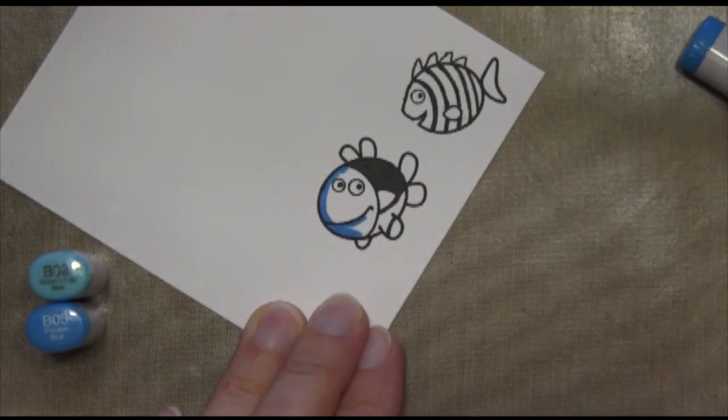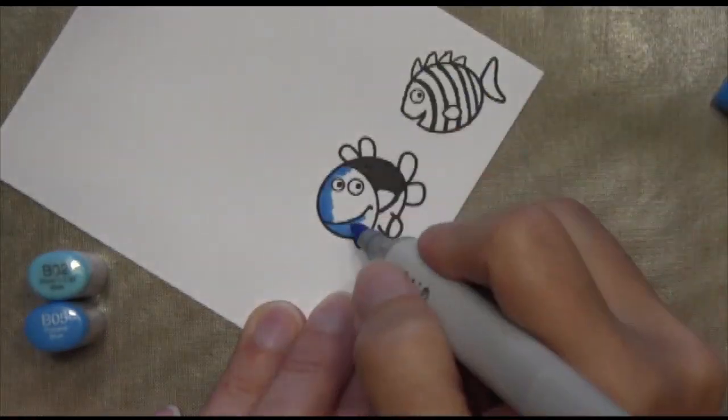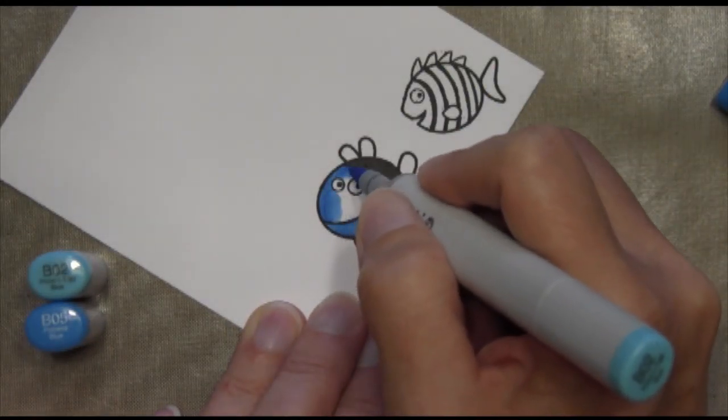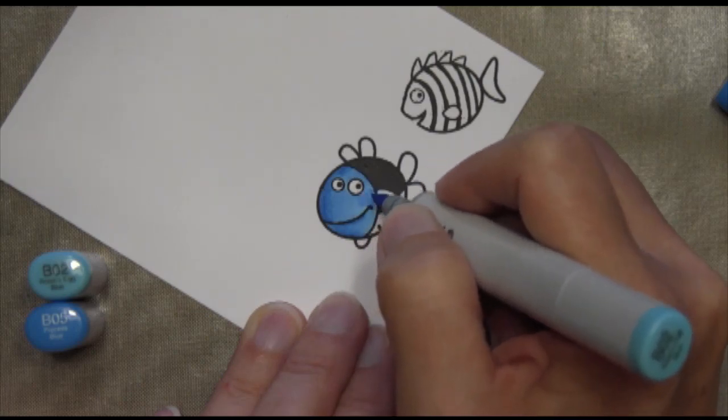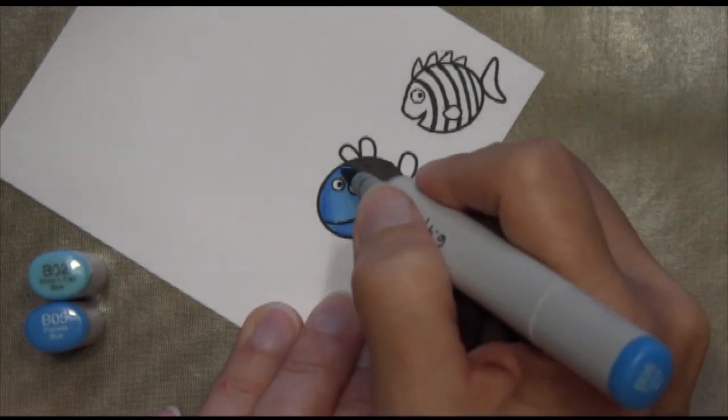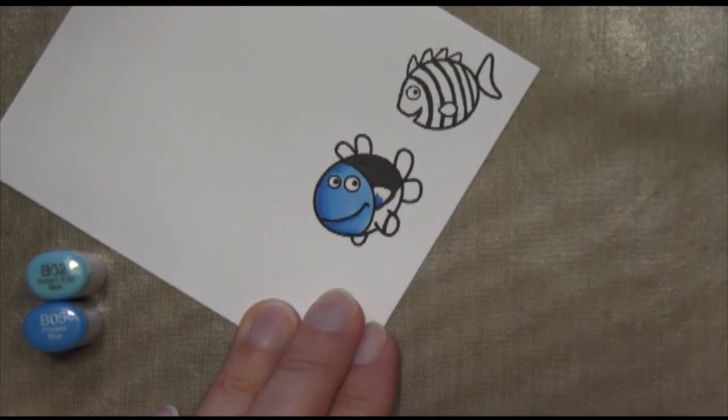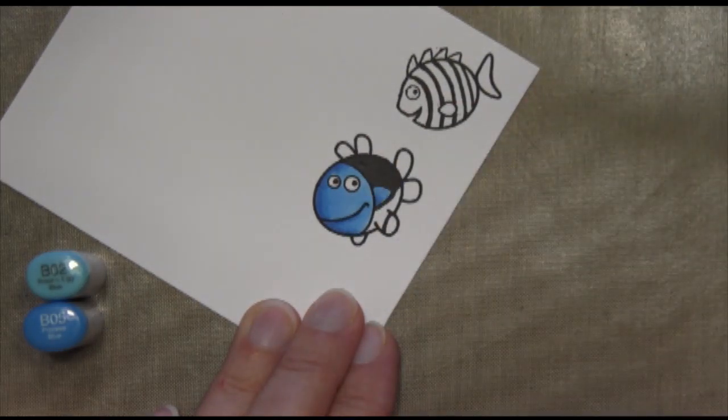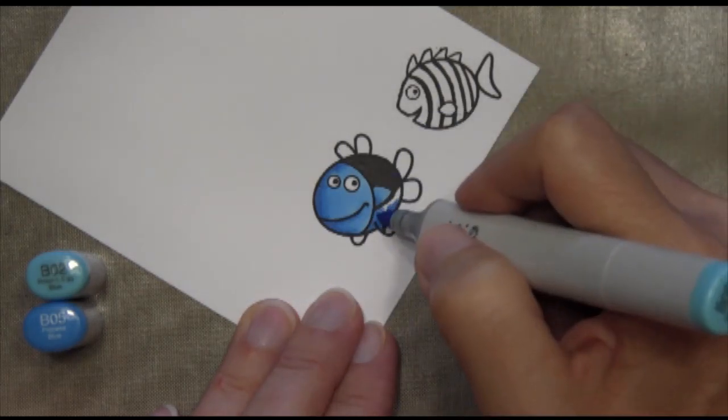Now I'm coloring these two fish with Copics. And that's why I use the Copic liner because it's not going to bleed once the Copic hits it. And I'm just using two colors here, two colors of blue. It's B02 and B05. And I'm trying not to use too much ink because then it oversaturates. These are such small areas. So I just put a little bit of dark in there first and then I put some light on top of it.